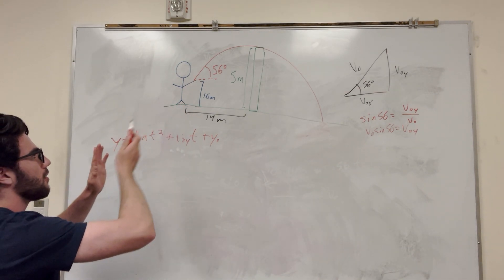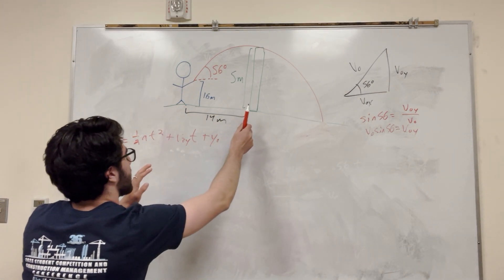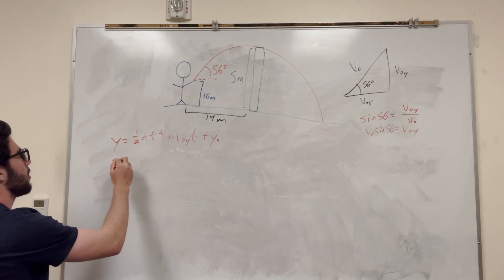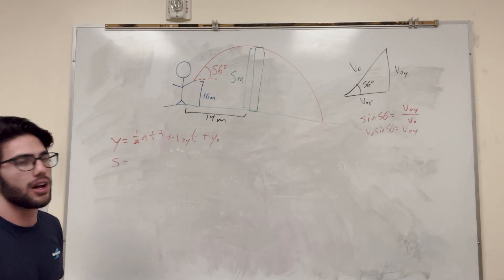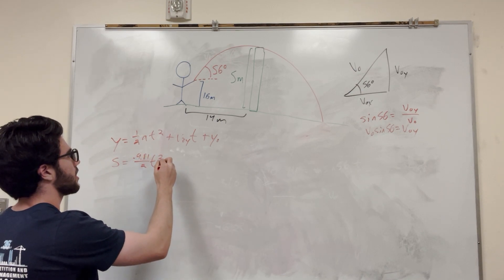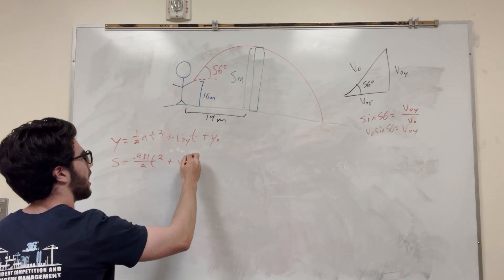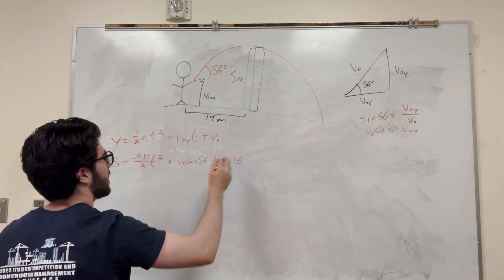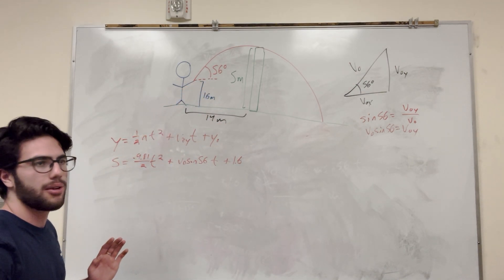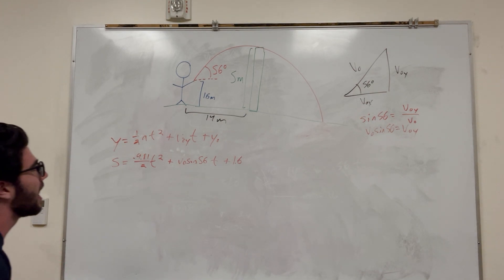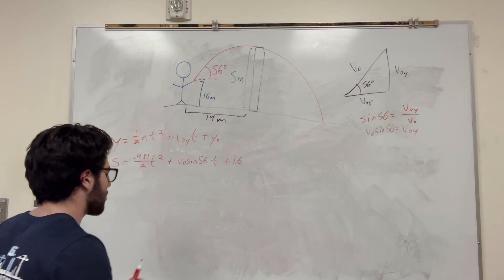So y — we're trying to go five meters up, right? We're trying to see what that initial velocity is when we get there. So we're going to say y is five meters — that's where we're trying to go. That's equal to acceleration 9.81, so it's going to be negative 9.81 divided by 2, t squared. Then v-naught-y becomes v-naught sine of 56 times t. And then y-naught we know is 1.6 — that's our starting y position, we're that far off the ground. We'll simplify it later when we get to it.